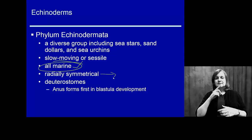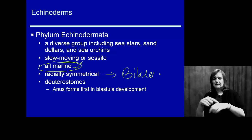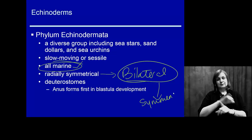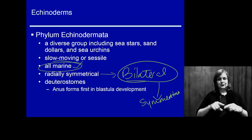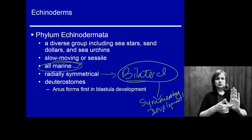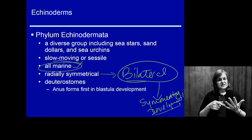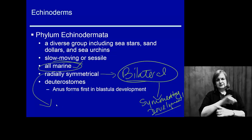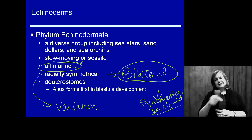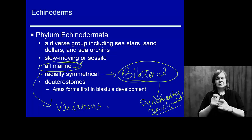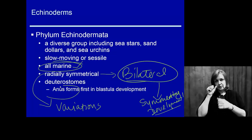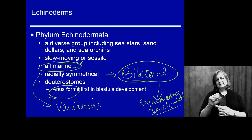They are radially symmetrical at some points, but we classify them as bilateral in their symmetry because symmetry is determined during development. These organisms in their larval stage are bilateral, and what we usually look for is what we call variations or alternating symmetry throughout their life cycle. In our deuterostomes, as we've talked before, the anus forms first.